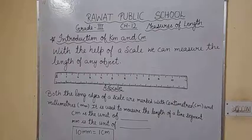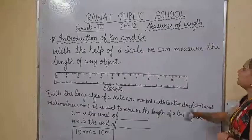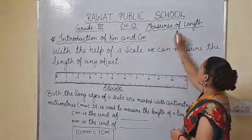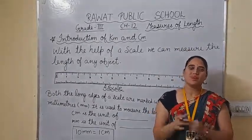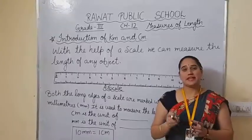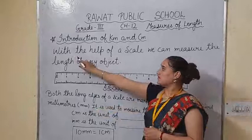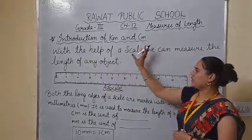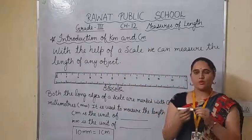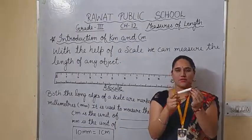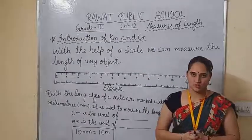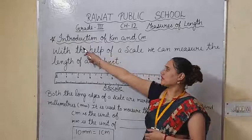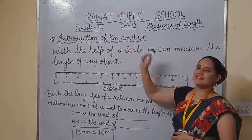Hello children and good morning to all of you. This is Grade 3 in our public school, chapter number 12. The name of the chapter is Measures of Length. In today's topic we are going to talk about length. Length means to identify any object's length — whether you can measure the length of this marker, the blackboard, or any other objects. So in today's topic we are talking about the introduction of kilometers and centimeters.